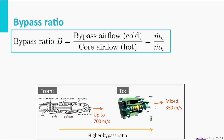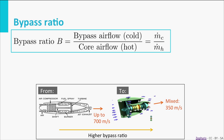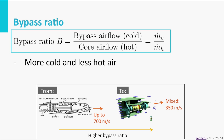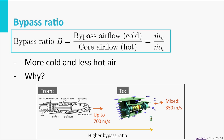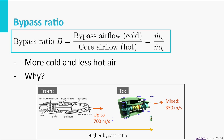A higher bypass ratio results in air which has a lower speed when it leaves the engine. So we have more cold and less hot air, and we also have a lower exhaust speed. To understand why, we have to look at the energy — at the power perspective.